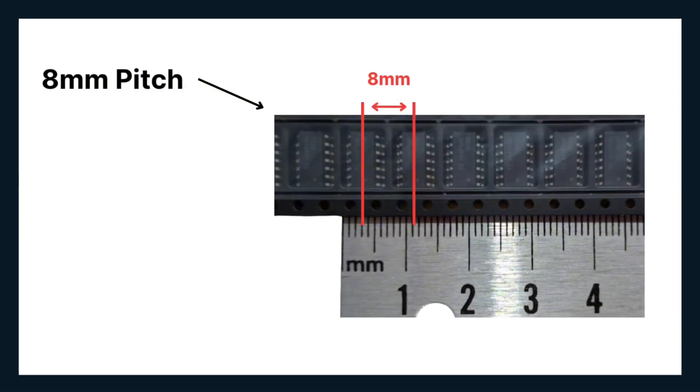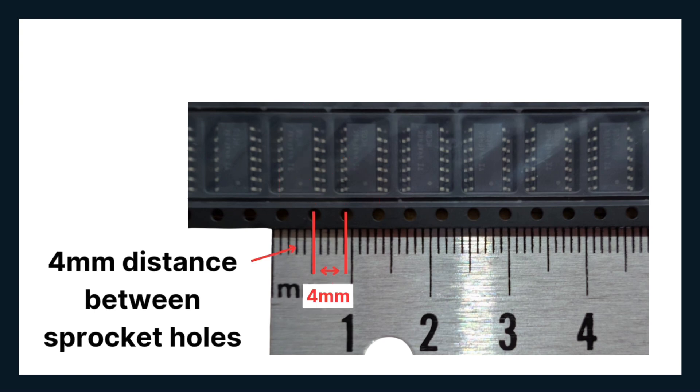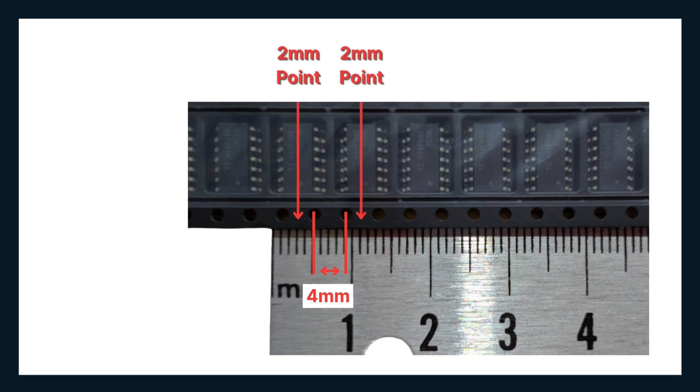Here, it is 8mm. Alternatively, you can use sprocket holes to measure pitch. Notice the sprocket holes running alongside the components. These guide the feeder in advancing the tape correctly. By industry standard, the distance between sprocket holes is 4mm. Since each hole is spaced 4mm apart, we can determine the pitch by measuring from the midpoint of one pair of sprocket holes to the next. In this example, the center of the component falls halfway between two sprocket holes at the midpoint, right at the 2mm point. From the midpoint of one pair of sprocket holes to the next is 8mm, confirming the pitch.